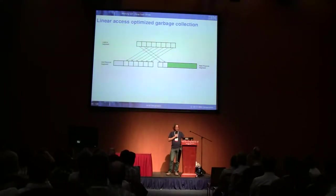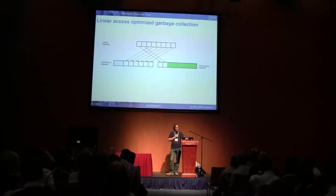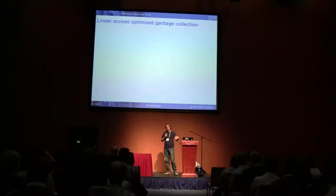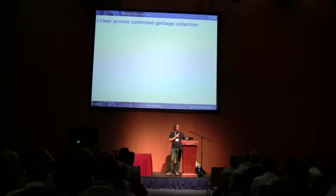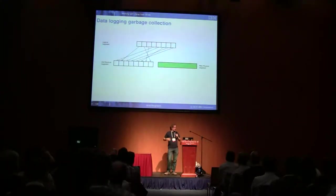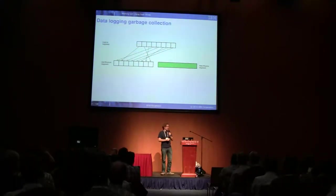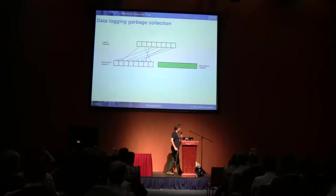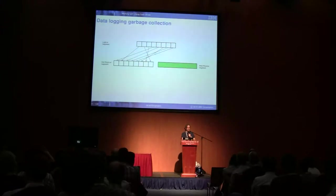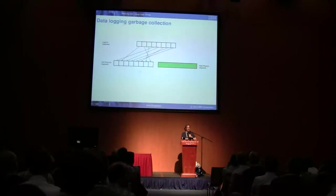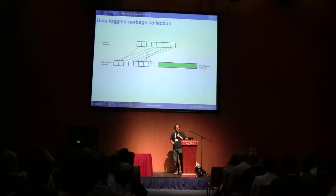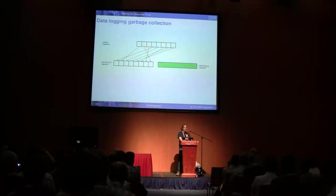There are multiple algorithms, and I'm explaining the two most important ones. Most of the cards that we normally want to use implement what I'm calling data logging garbage collection, because it's sort of like a log-structured file system. The association between the logical blocks within one erase block and the physical blocks can be random — there's some kind of lookup table. So we can write a random block and just pick the next free block out of the new physically erased space, write that, and update the pointers.